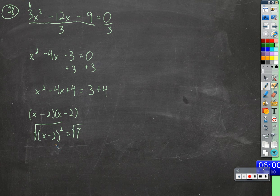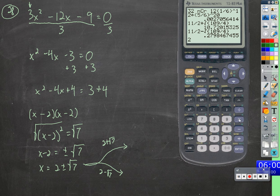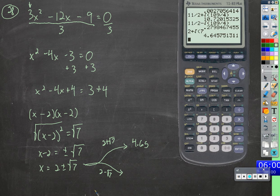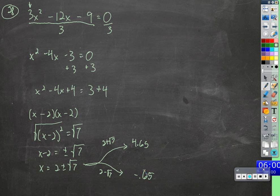We'll take the square root of both sides, so x minus 2 equals plus or minus the square root of 7. We'll add 2 to both sides and get x equals 2 plus or minus the square root of 7. The decimal form of the answer is 2 plus the square root of 7 and 2 minus the square root of 7 — that's 4.65 and negative 0.65. We took something that was unsolvable before, turned it into a perfect square trinomial, and got solutions where we couldn't have before.